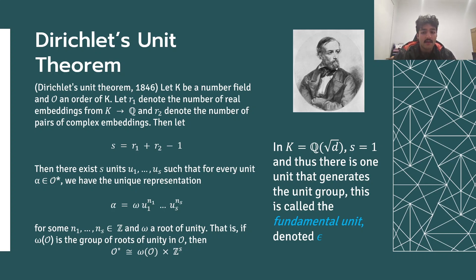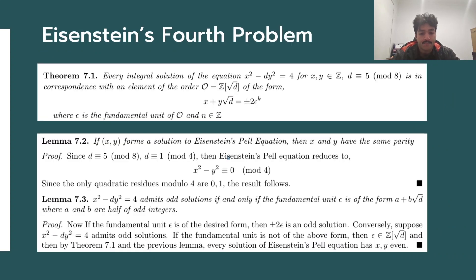This theorem implies that every solution to the Pell equation x squared minus dy squared equals plus or minus 1 can be found by finding the unit group of the ring of integers. Now, we move on to some results which relate to Eisenstein's fourth question. One can show that every solution (x, y) to Eisenstein's Pell equation x squared minus dy squared equals to 4 corresponds to an element of the order Z[√d].